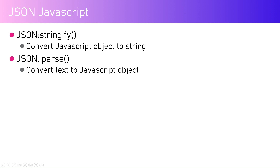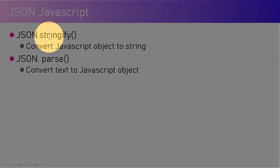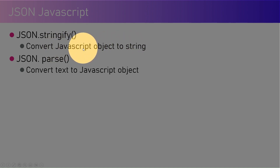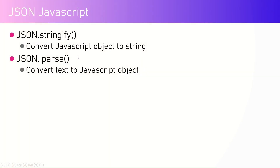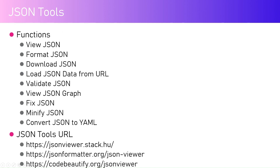There are two main JSON methods: JSON.stringify and JSON.parse. JSON.stringify converts a JavaScript object to a string — as the name indicates, it stringifies the object, provided that object is in a JSON-representable format. JSON.parse is basically the reverse: it converts a text string back into a JavaScript object.